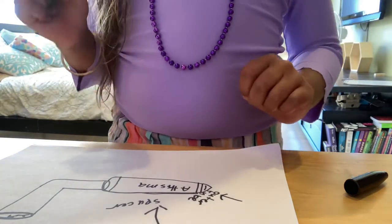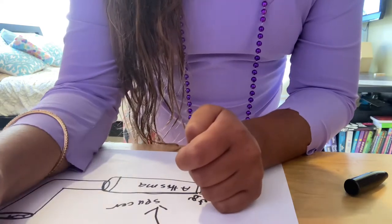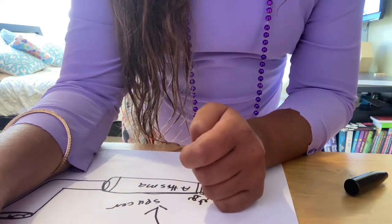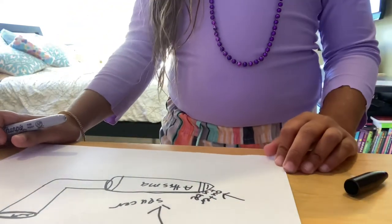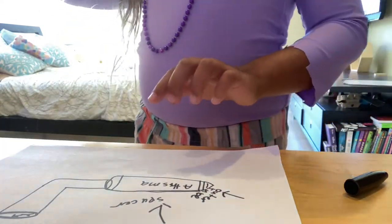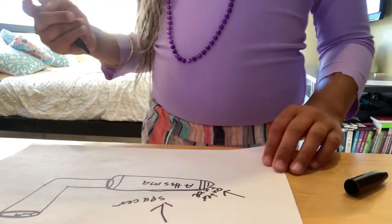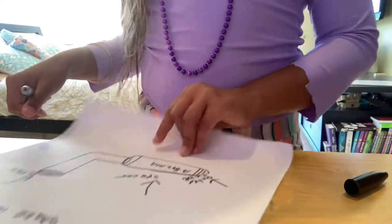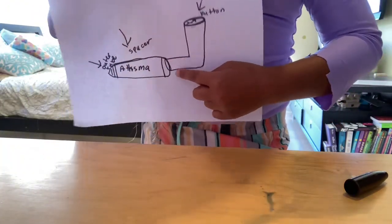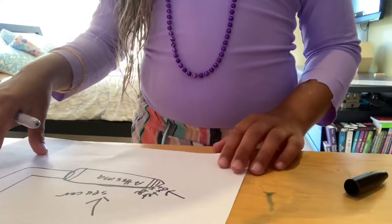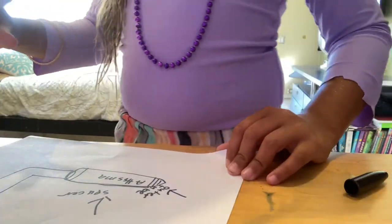First you shake the inhaler. Then you push the bottom of the inhaler down into the spacer — into the beginning part of the spacer, right here. And then you push the button.